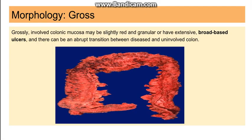Looking at the gross morphology of ulcerative colitis: the disease involves firstly the rectum, and from the rectum it extends proximally to involve all of the colon. There are no skip lesions, unlike in Crohn's disease. There is diffuse involvement of the colon. Grossly, the colonic mucosa will be red or granular, and very characteristically, broad-based ulcers are seen in ulcerative colitis.